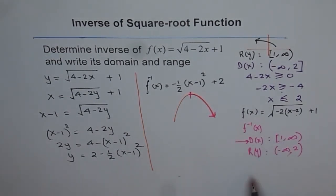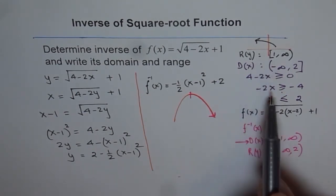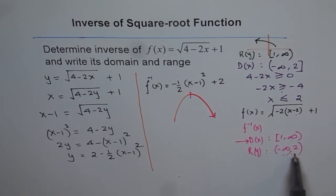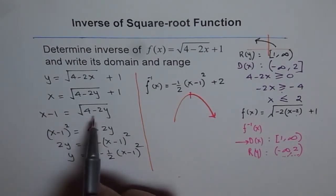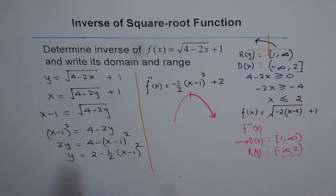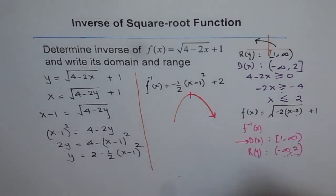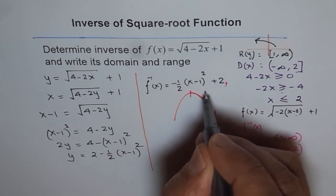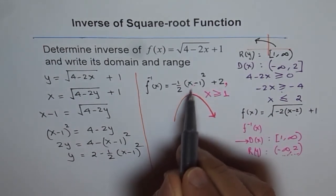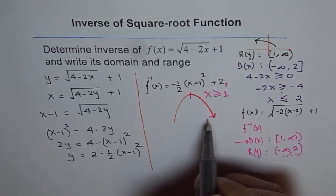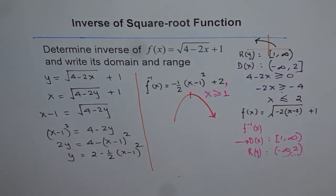Our domain is from 1 to infinity. That is why we started with domain and range — to highlight this portion. When you square both sides, you have to write down your restriction, and the restriction is that x is greater than or equal to 1. This parabola has a vertex at 1. We cannot consider both sides; we need to consider only one side, and that side is x greater than or equal to 1.